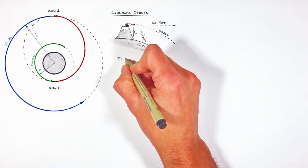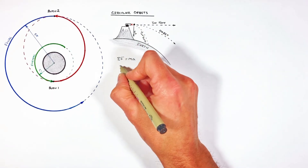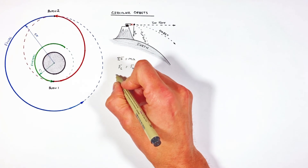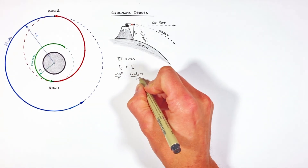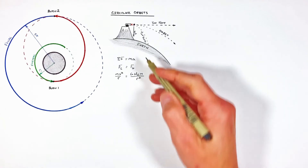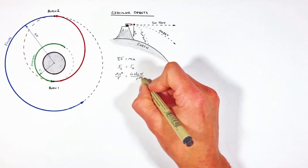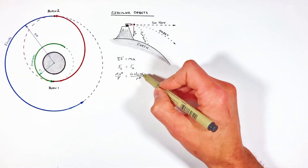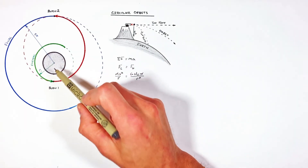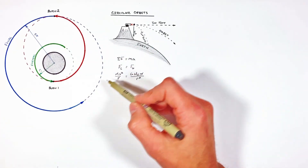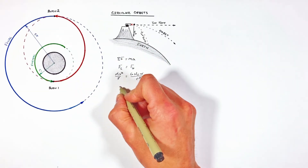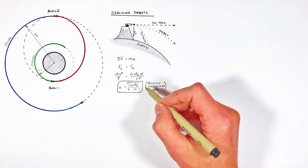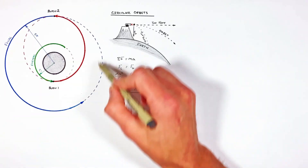For any object in orbit, the centripetal force is equal to the force of gravity. Expanding out each of these terms, we can set centripetal force equal to gravitational force, and the mass of the satellite cancels out, as does the radius of orbit. Here we use the mass of the Earth since it's the central object, but realize you can apply a Hohmann transfer to orbits around any celestial body. This leaves us with a function for the velocity of our satellite in both the initial and final circular orbits.